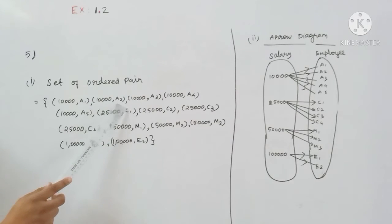So 10,000 maps to A1, 10,000 maps to A2, 10,000 A3, 10,000 A4, 10,000 A5.